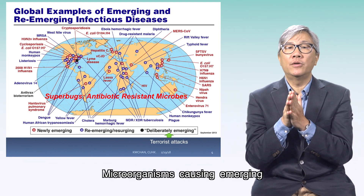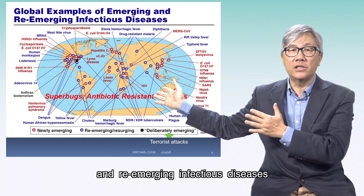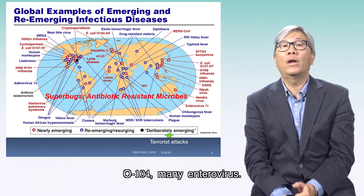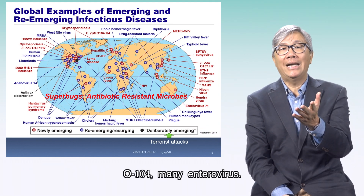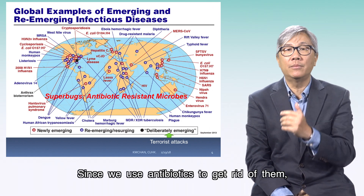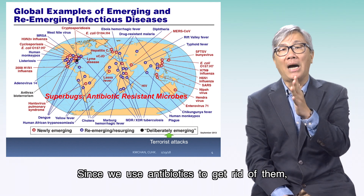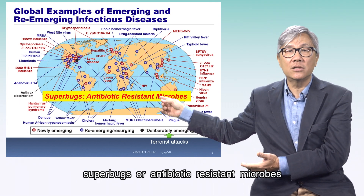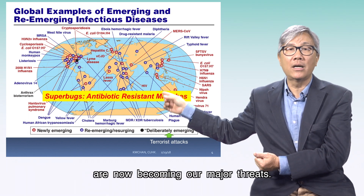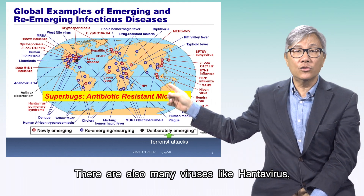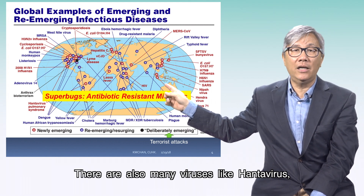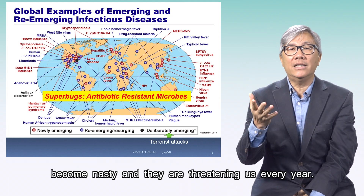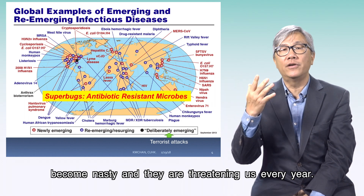Microorganisms causing emerging and re-emerging infectious diseases include several major ones like E. coli O157, O104, and many enteroviruses. Since we use antibiotics to get rid of them, superbugs or antibiotic-resistant microbes are now becoming a major threat. There are also many viruses like hantavirus; influenza viruses become nasty and they are threatening us every year.